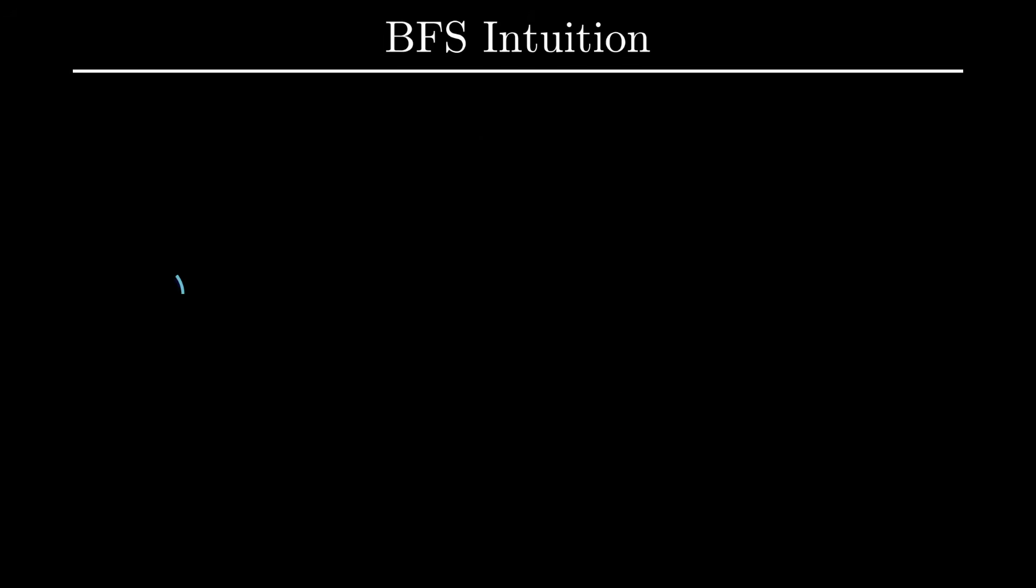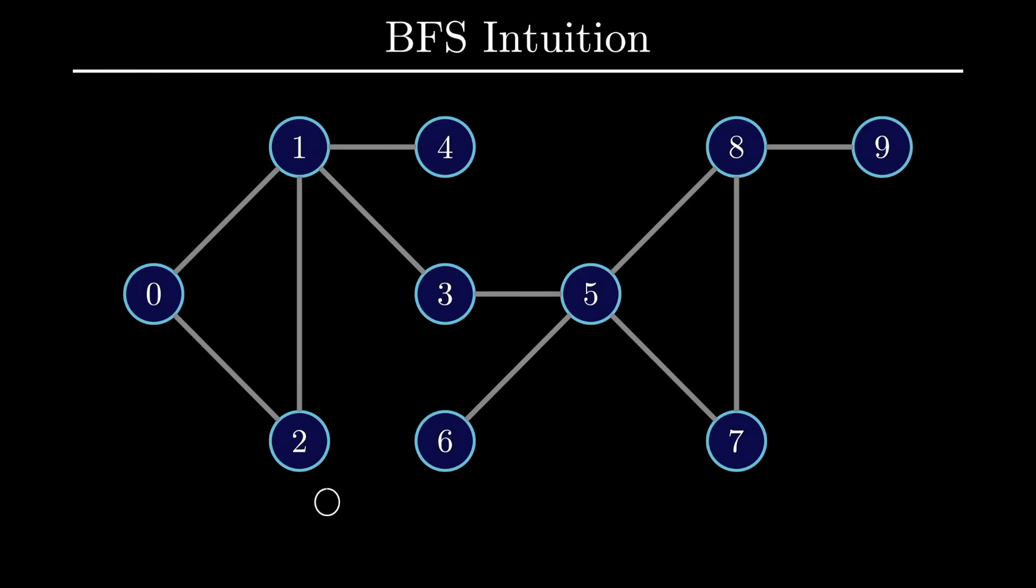Let's extend this intuition to a more complex graph. Starting at vertex 0, the idea of BFS is that we first visit a vertex, and then visit all vertices of distance 1 from that vertex.